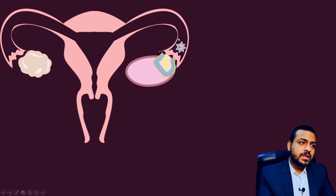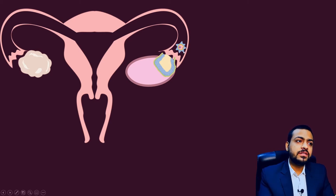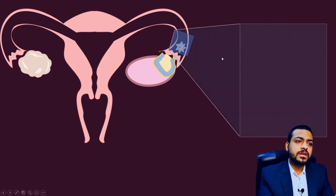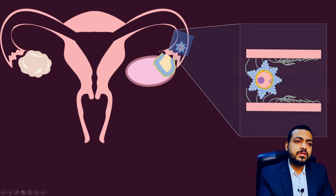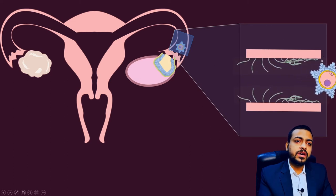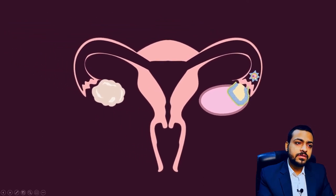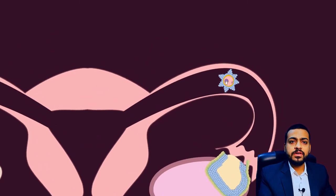On the walls of this uterine tube there are special hair-like ciliary processes, and with the movement of these cilia — with the beating of cilia — this secondary oocyte will be transported from the infundibulum to the ampulla of the uterine tube, traveling through this path ultimately coming into the ampulla.